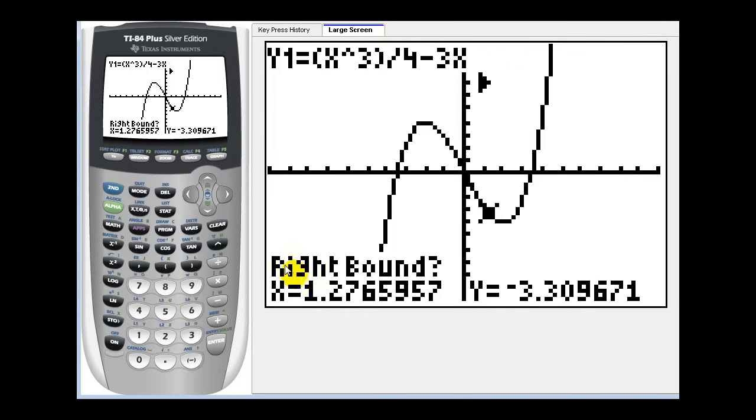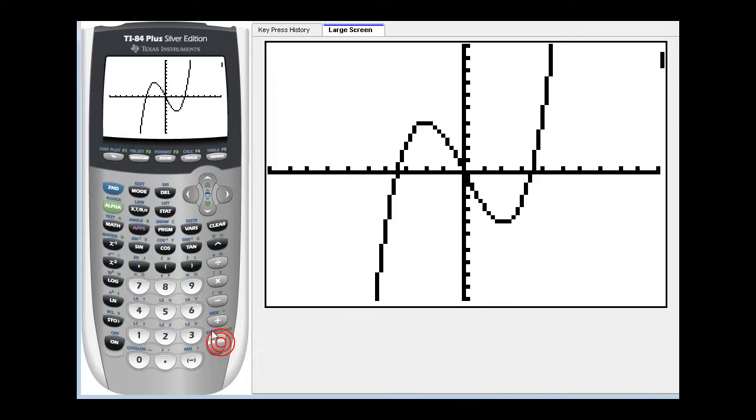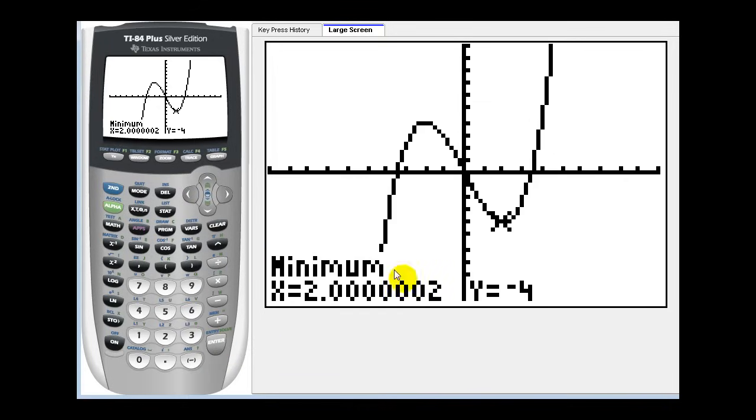Now it's going to ask for the right bound. So we need to move the cursor to the right of the relative minimum. Something like this. Press enter again. It is going to ask us to guess, this is actually optional, but if we move the cursor closer to the relative minimum, it can help the calculator out a little bit. Now press enter one more time, and it will tell us the coordinates of this point.